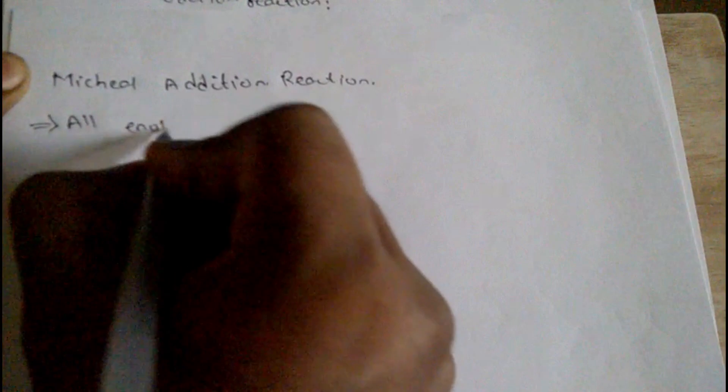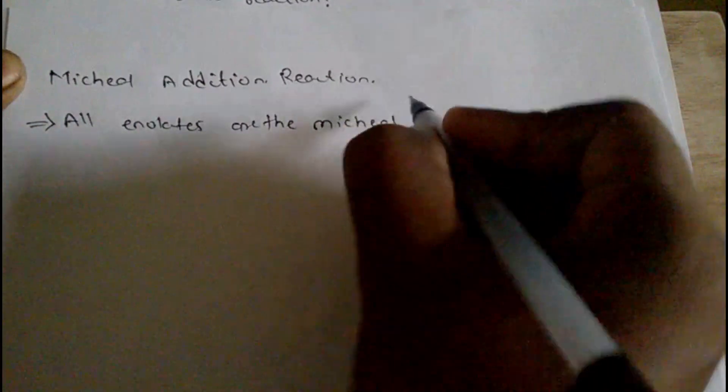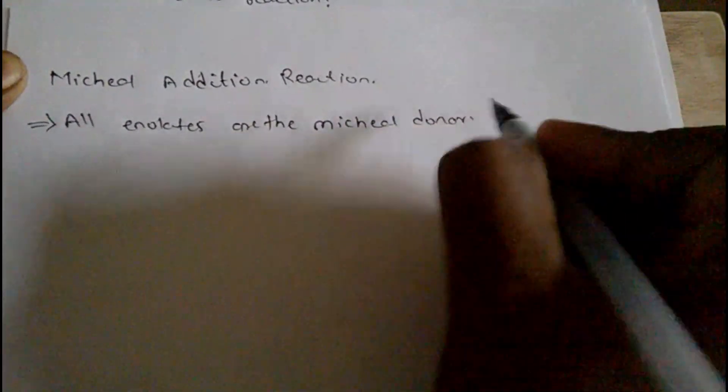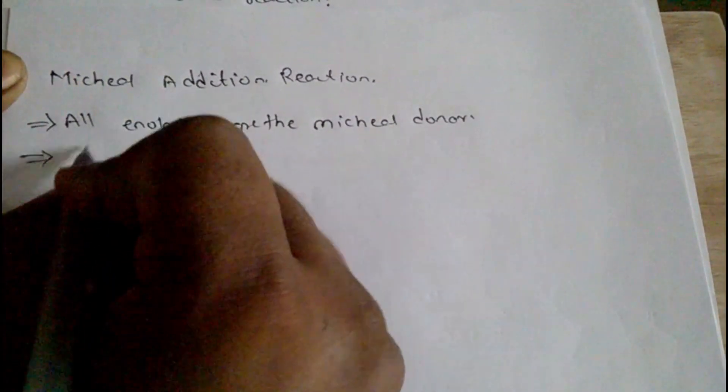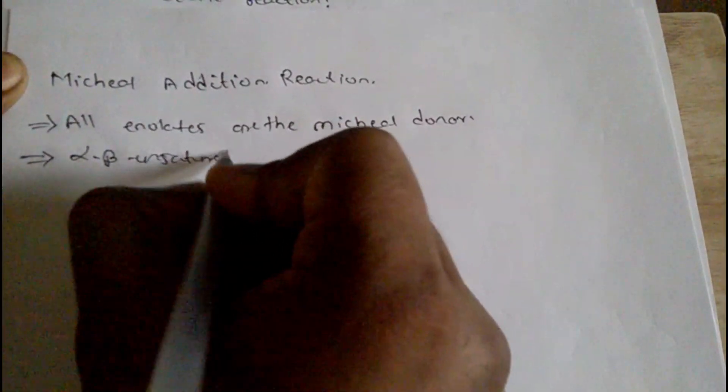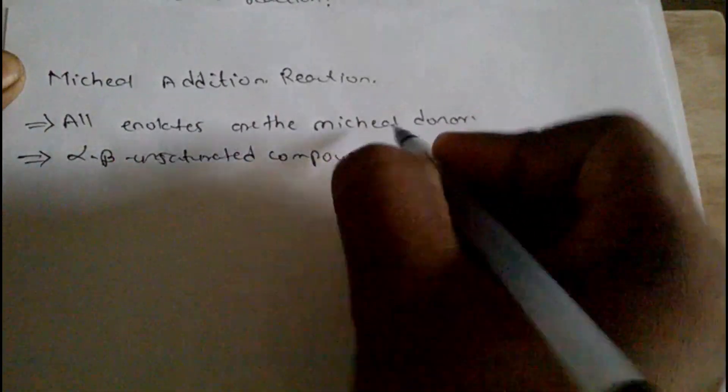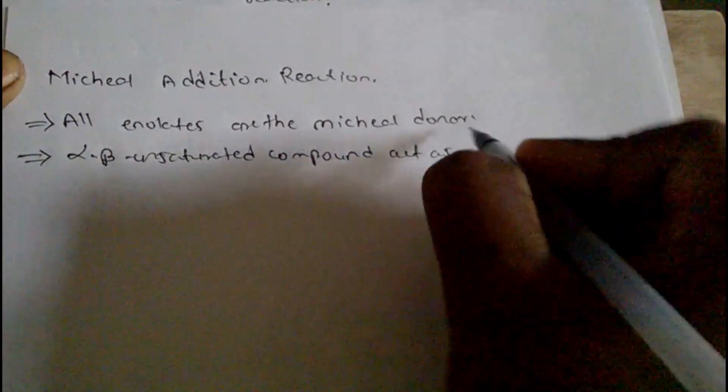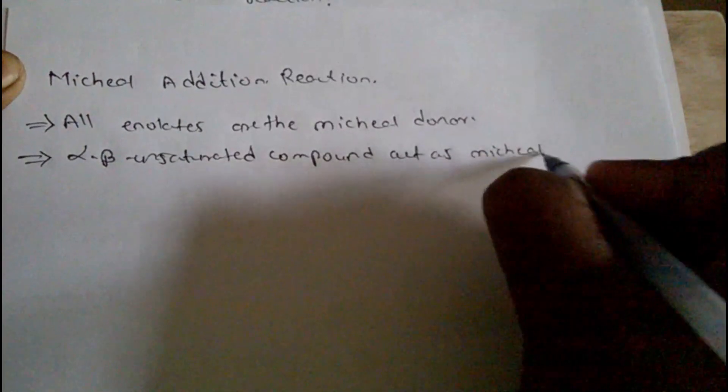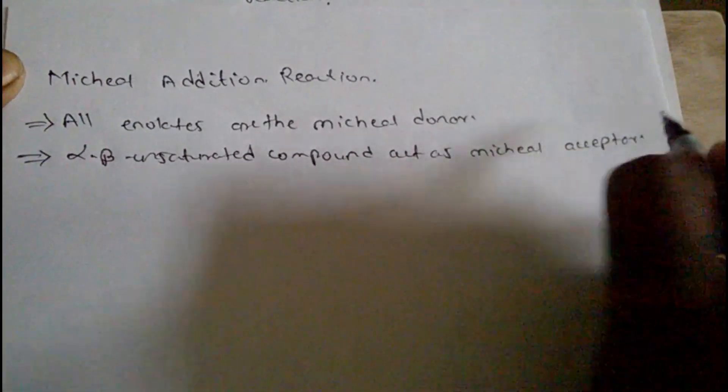All enolates are the Michael donor and alpha-beta unsaturated compounds act as Michael acceptor.